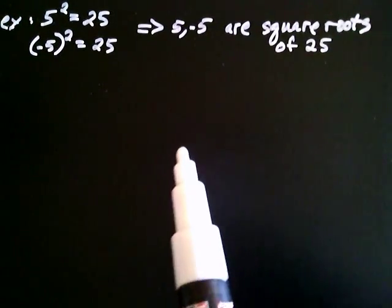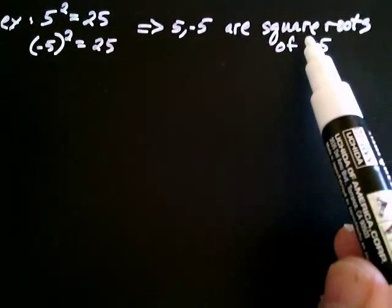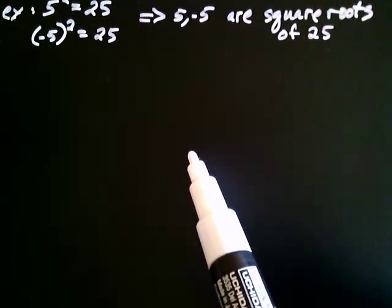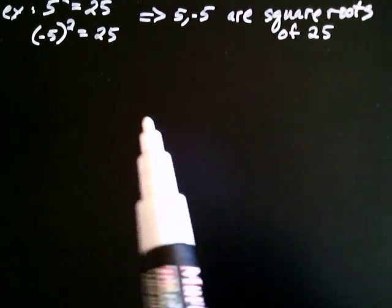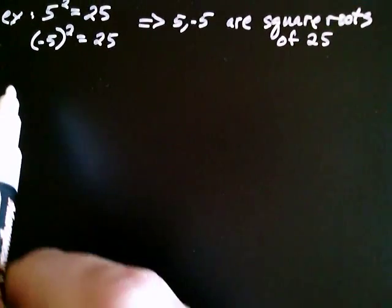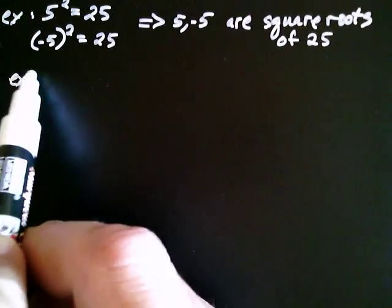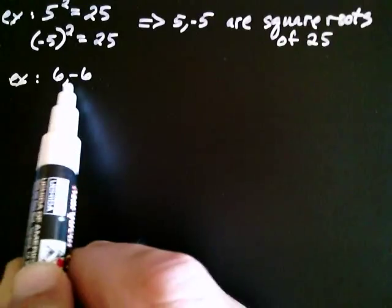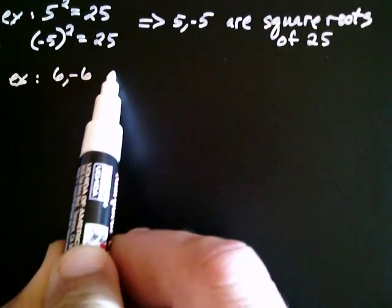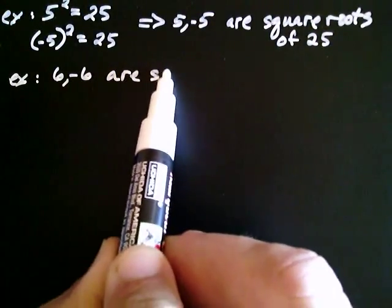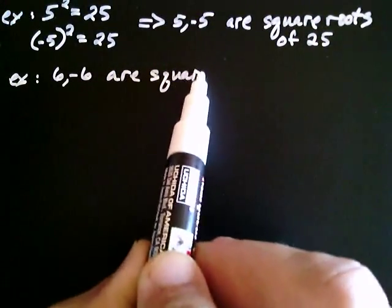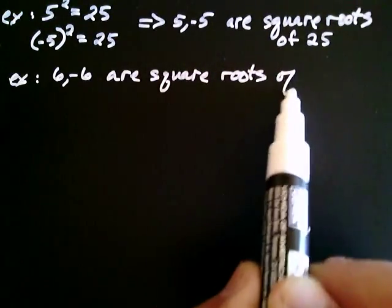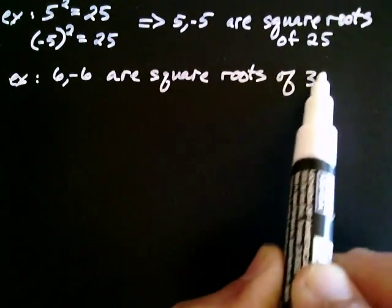So with that definition of what it means to be a square root, can you think of what the square roots of 36 would be? Well, you might guess 6 and negative 6. So 6 and negative 6 are square roots of 36.